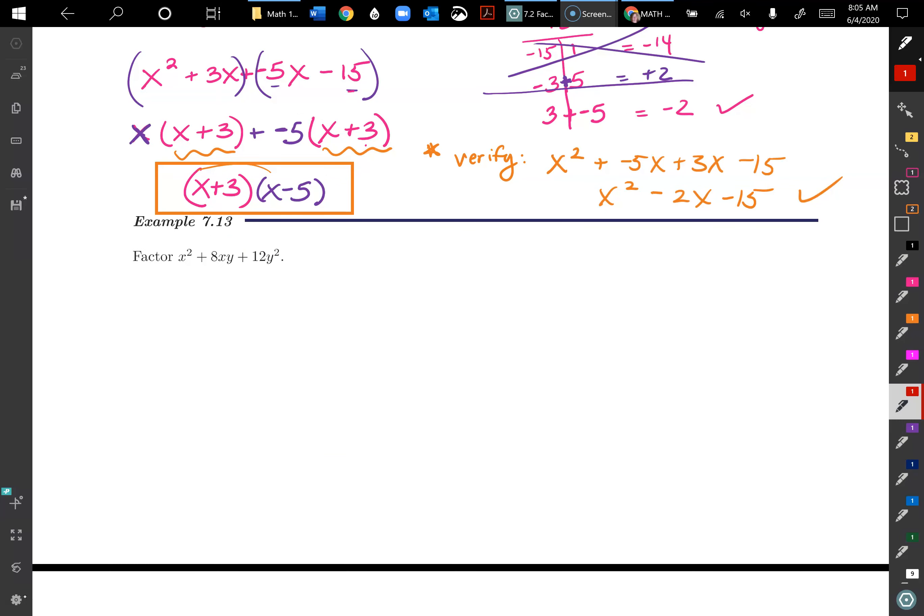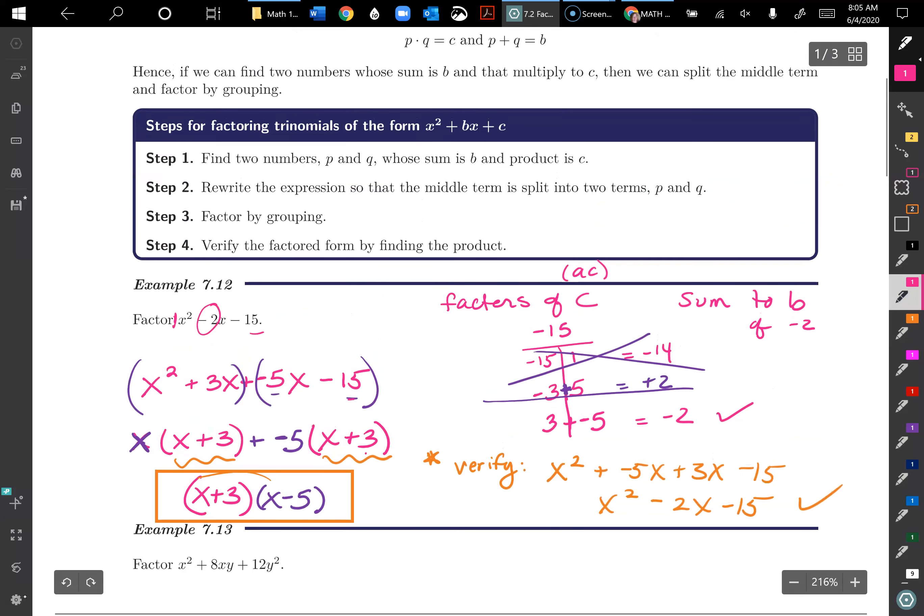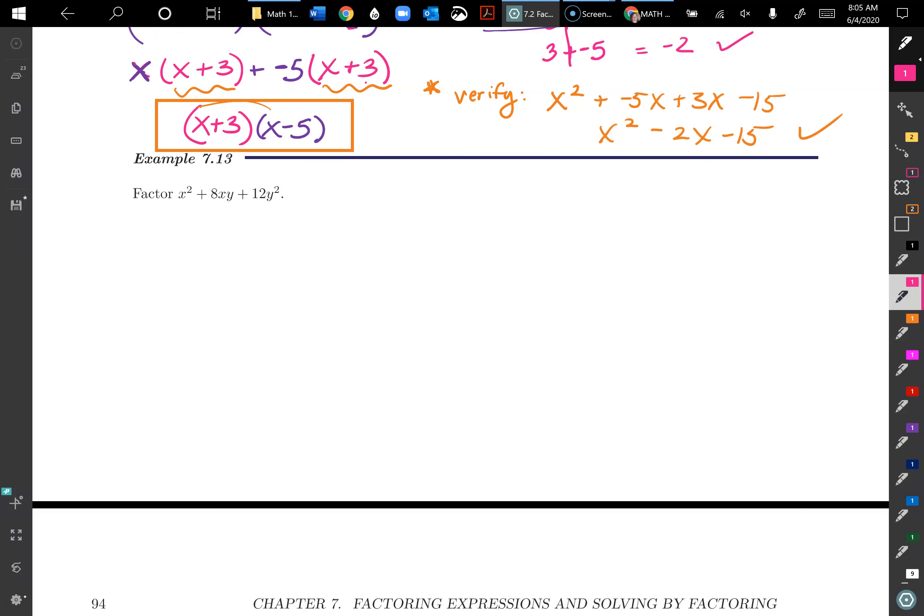So now let's look at example 7.13. We have factor x squared plus 8xy plus 12y squared. Now at any point, if you want to try this on your own, pause the video and just go ahead and do it and check back. And again, I really want to point out that this is actually AC, just because in the future we want to not assume every lead coefficient is going to be 1. In this case it is. But AC, in this case, is actually 1 and 12. But we also have to consider the x, that we have an x and a y.